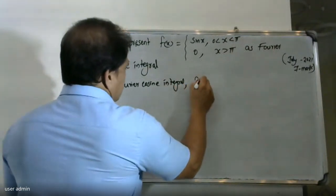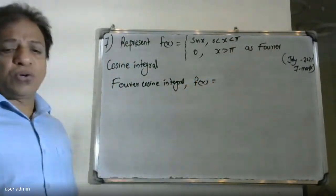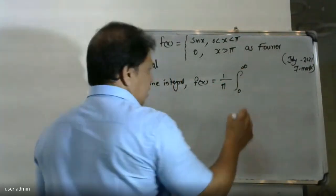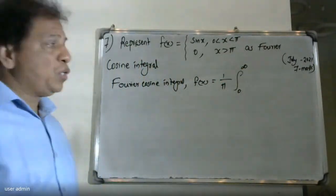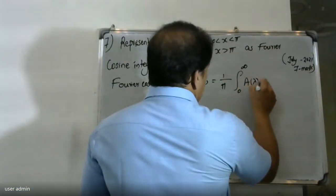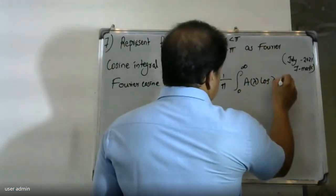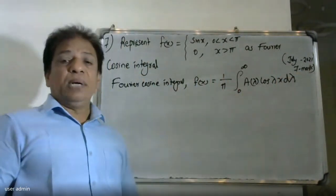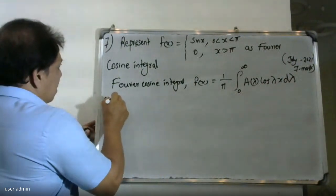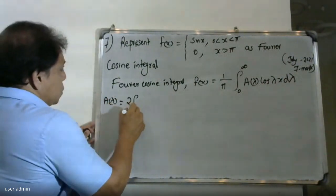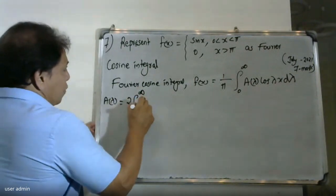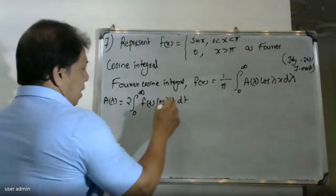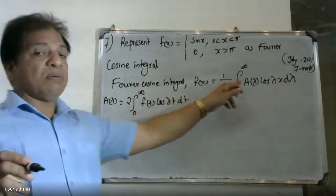f(x) is equal to — using the Fourier cosine integral formula — (1/π) integral from 0 to infinity of A(λ) cos(λx) dλ. In this formula, A(λ) is equal to 2 times the integral from 0 to infinity of f(t) cos(λt) dt. We have to find A(λ) by substituting f(t).